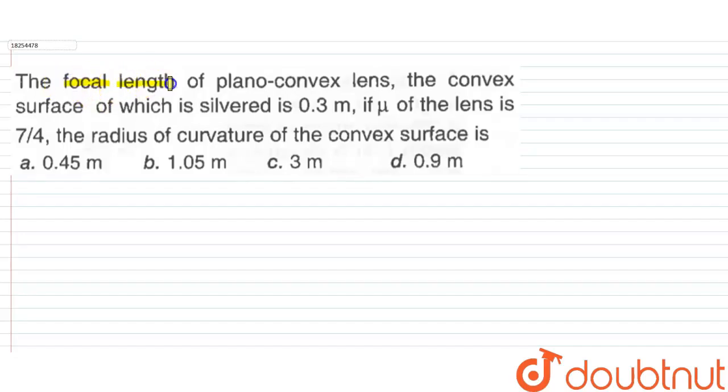Our question says that we have a plano-convex lens. The focal length of the silvered convex surface is 0.3 meters. If μ (refractive index) of the lens is 7/4, we need to find the radius of curvature of the convex surface.